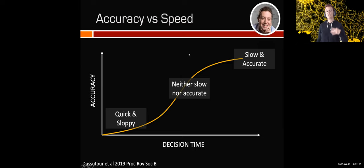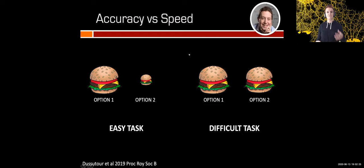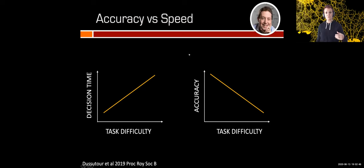This trade-off also depends on a third parameter: task difficulty. If a task is easy, it's very easy to be quick because option one is far better than option two. When the task gets difficult, it's tricky because you have to spend time comparing both options, but you still have a high probability of getting it wrong. When it's really difficult to tell the difference between two options, you will ponder for a very long time but still have a high probability of getting it wrong.